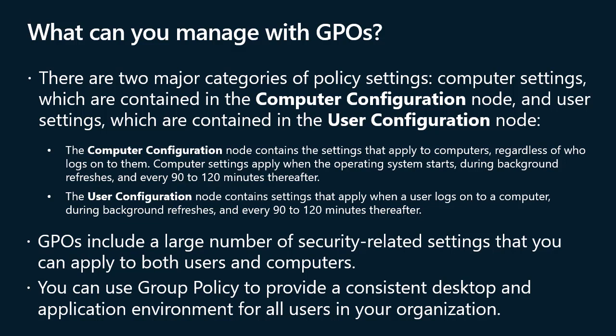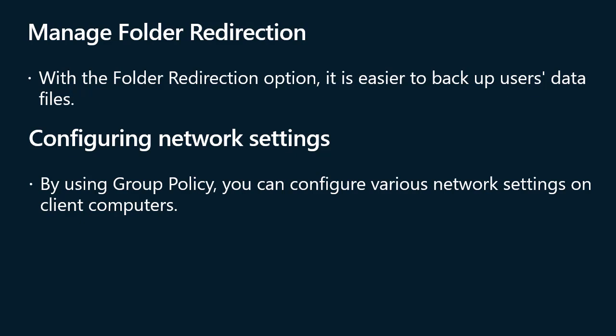You can use group policy to provide a consistent desktop and application environment for all users in your organization. By using GPOs, you can configure each setting that affects the representation of the user environment, and you can configure settings for applications that support GPOs. With group policy, you can also deploy software to users and computers — all software available in MSI format. You can enforce automatic software installation or let users decide. Most organizations use other methods such as Configuration Manager and Intune. With folder redirection, it is easier to back up users' data files, and you ensure users have access to their data regardless of the computer to which they sign in.